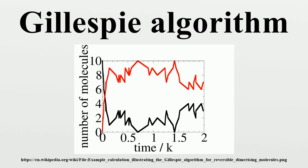In the algorithm, we advance forward in time in two steps: calculating the time to the next reaction, and determining which of the possible reactions the next reaction is.